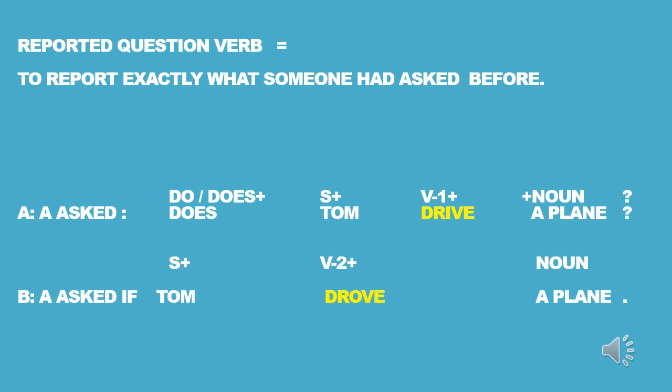This time we use the verb to do. Previously we used verb to be; now we use verb to do. 'A asks: Does Tom drive a plane?' 'Does' comes from verb to do, Tom is the subject, 'drive' is verb 1, 'a plane' is the noun. For reported questions it becomes: 'A asks if Tom drove a plane.' We add 'if', then Tom moves from subject position and 'do/does' moves to Tom's position. The noun stays the same, and there is no more question mark.